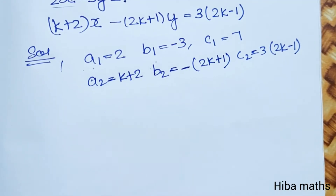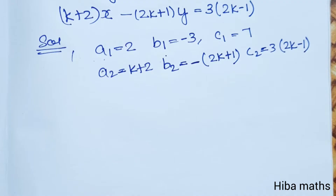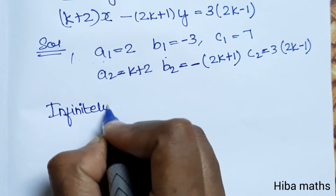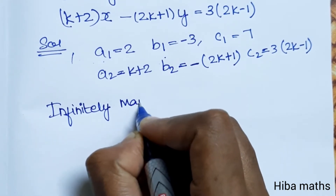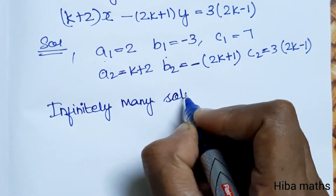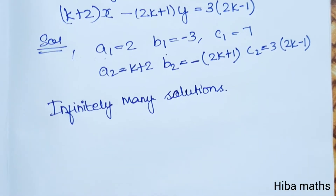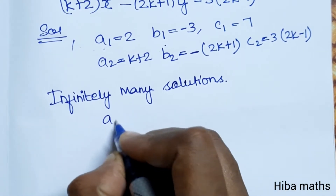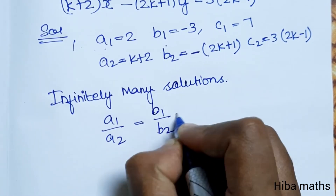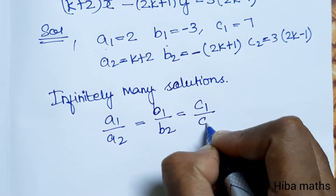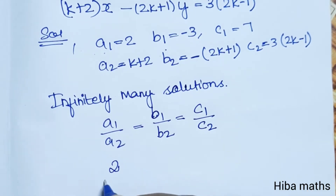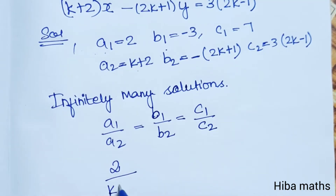Now applying the condition for infinitely many solutions: a1/a2 = b1/b2 = c1/c2. Substituting: a1 is equal to 2, a2 is k plus 2.